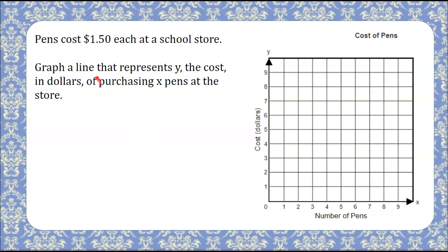Welcome back. We're graphing a line, and we know that y is the cost in dollars of purchasing x pens. So we're going to use that information, and we're going to write ordered pairs, where x represents the number of pens I purchase, and y is the total amount I spent at the school store purchasing that number of pens. We're told that each pen is $1.50.